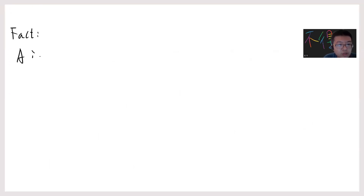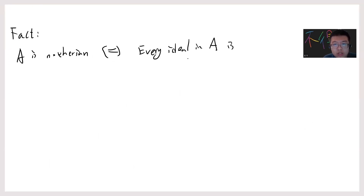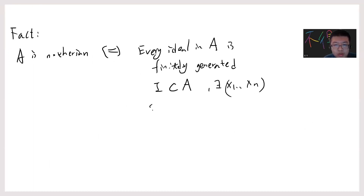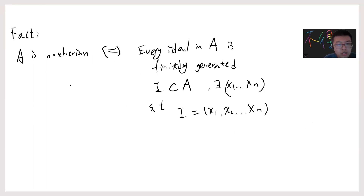In order to prove this, we need another equivalent definition. So there is a fact that A is Noetherian if and only if every ideal in A is finitely generated. This means that if you take an ideal I in A, then there exist x₁, ..., xₙ such that I equals the ideal generated by x₁, ..., xₙ — so every element in I is a linear combination with coefficients in A. We need this theorem, which should be viewed as a fact, so that one can more easily prove something is Noetherian; otherwise the ascending chain condition is not easy to use directly.